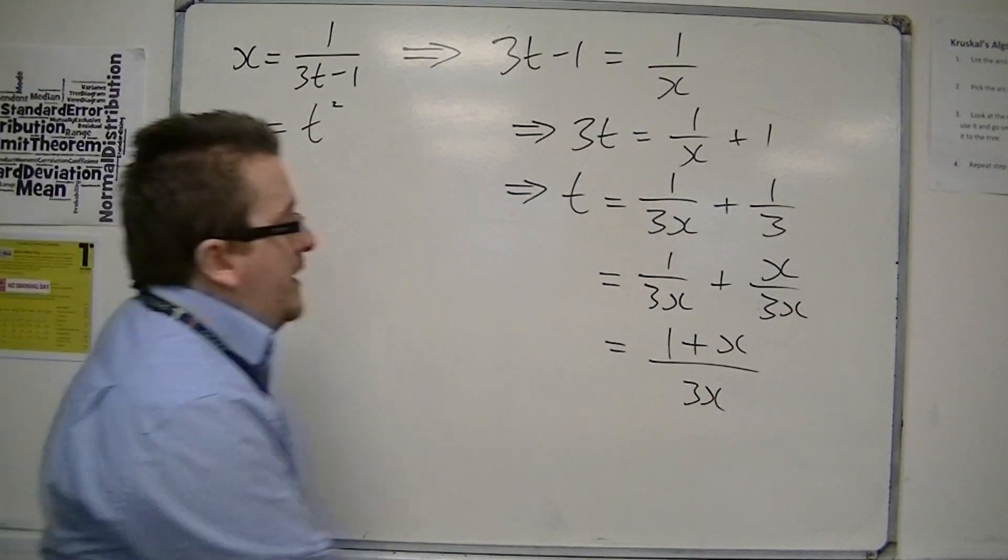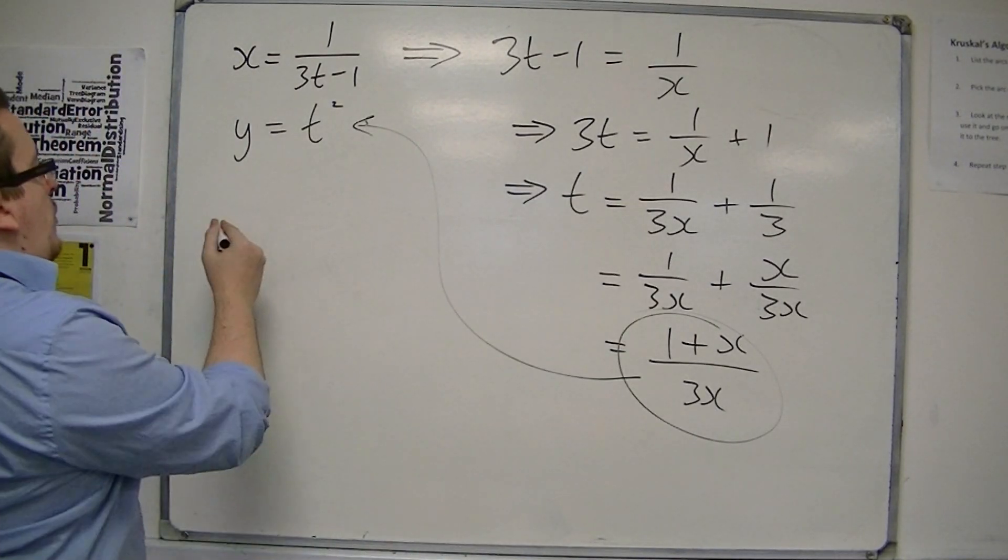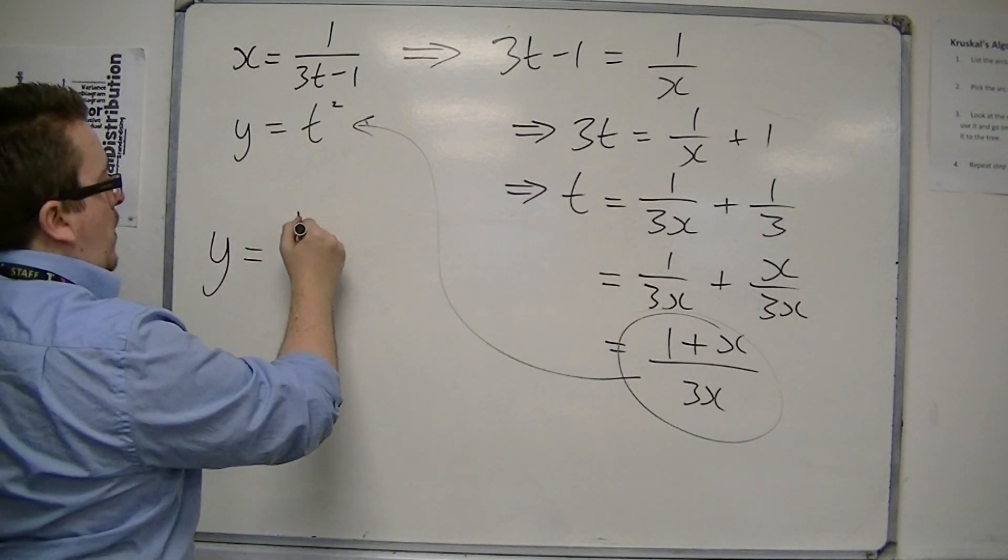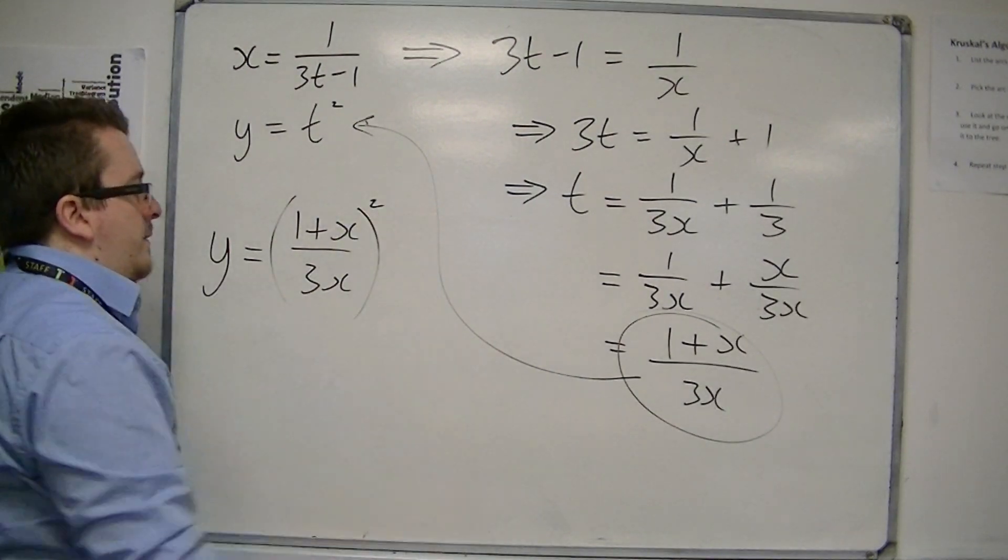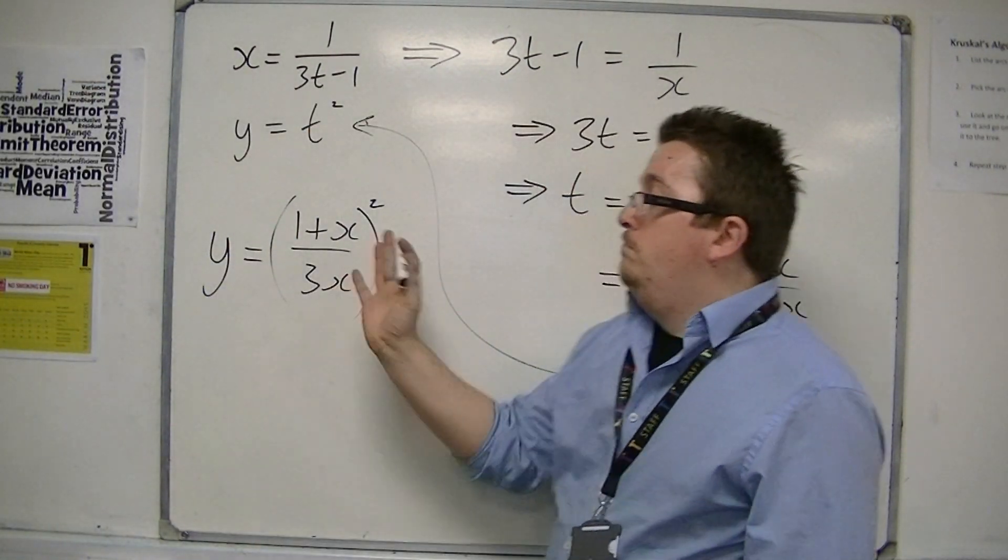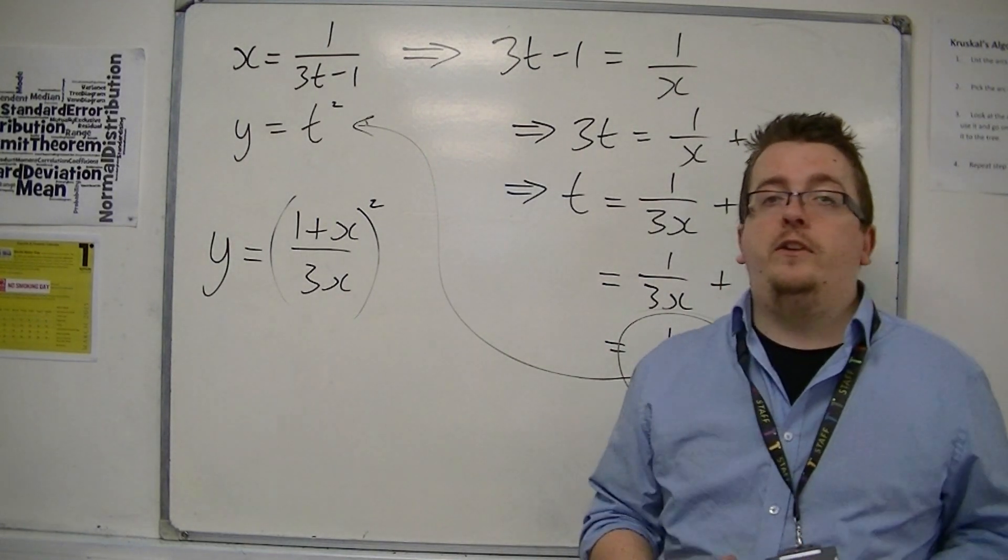And then I can substitute this into the second equation. So y equals 1 plus x over 3x squared. And that is much easier to work with. It's one equation and looks a lot nicer.